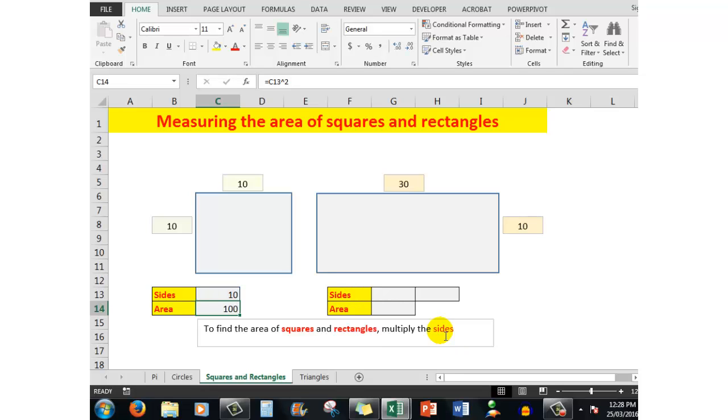Ctrl enter tells me that the area is 100. The sides of the rectangle are 30 and 10. Multiplying the two together, when I ctrl enter, my answer is 300. You can see here in calculating the area of the square, I was able to use the power symbol, the carat shift and 6. Let's look at triangles.